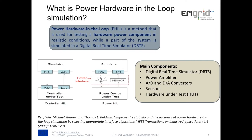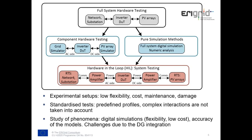According to a classification made some years ago by CAPS FSU in Florida, there are two types of hardware-in-the-loop: controller hardware-in-the-loop and power hardware-in-the-loop. In the first case, a controller is tested and only digital-to-analog and analog-to-digital converters are needed. Power hardware-in-the-loop is used for testing a hardware power component, requiring a power interface to amplify the low-level signal from the real-time simulator, plus a sensor to measure the hardware response and send it back to close the loop.